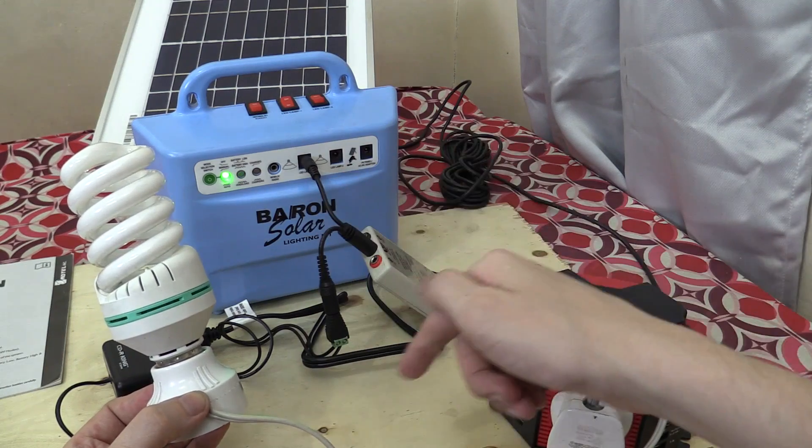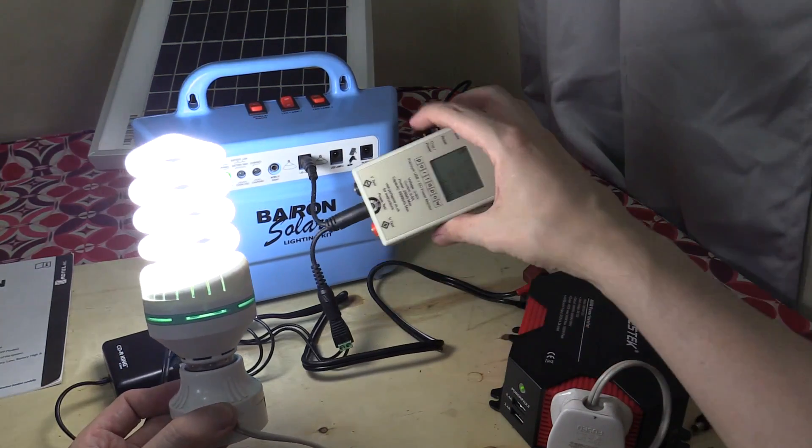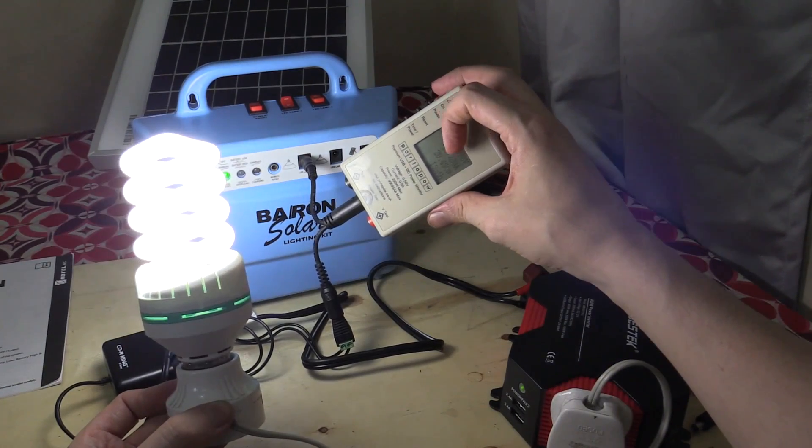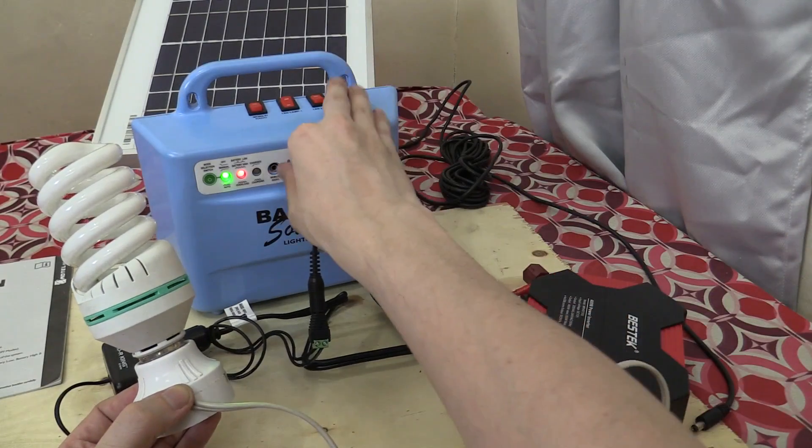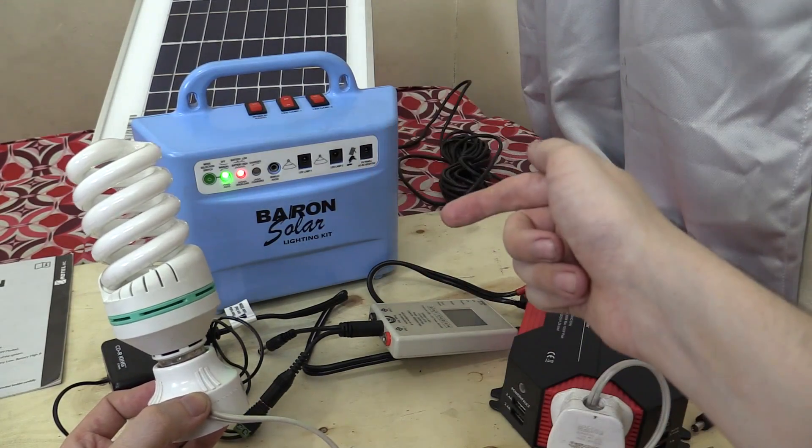Now, I really wouldn't recommend doing that many times, but you can see that it does have that protection. Now it's kicked back in. We're drawing 20 watts, 1.7 amps, and again, it turns off. So I am going to stop that. But you can see it does have protection against overcurrent.